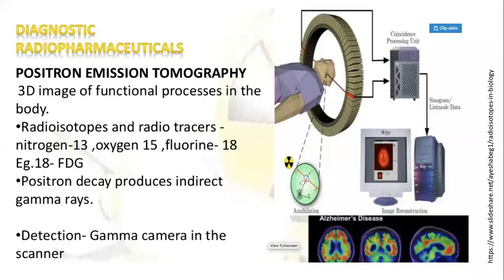Radioisotopes also play an important role in diagnostics through positron emission tomography — PET scanning — which produces a 3D image that helps us understand the functional processes taking place within the body. The isotope radiotracers used include nitrogen-13, oxygen-15, and fluorine-18. The positron decay produces indirect gamma rays detected by a gamma camera placed inside the scanner. The diagram here shows a PET scan report illustrating the progression of Alzheimer's disease and the changes occurring within the human brain.